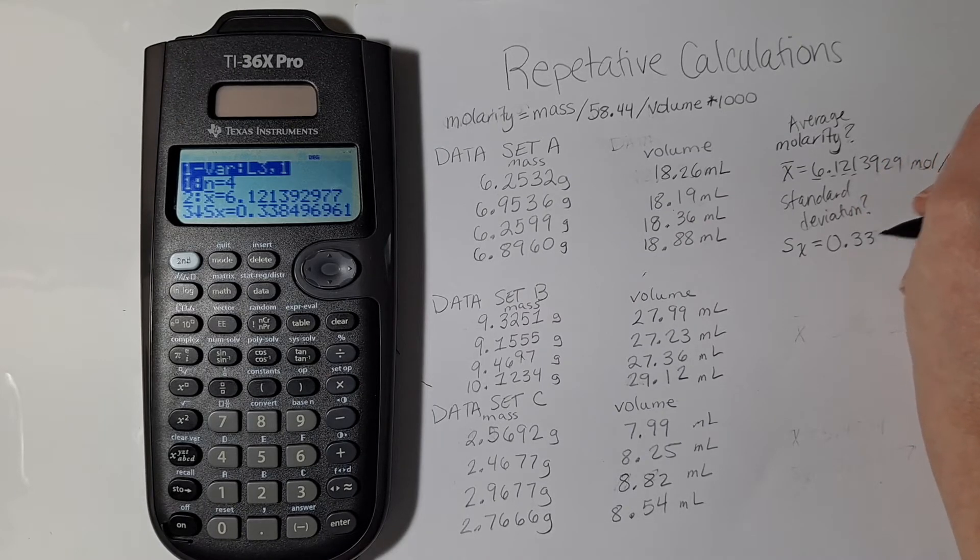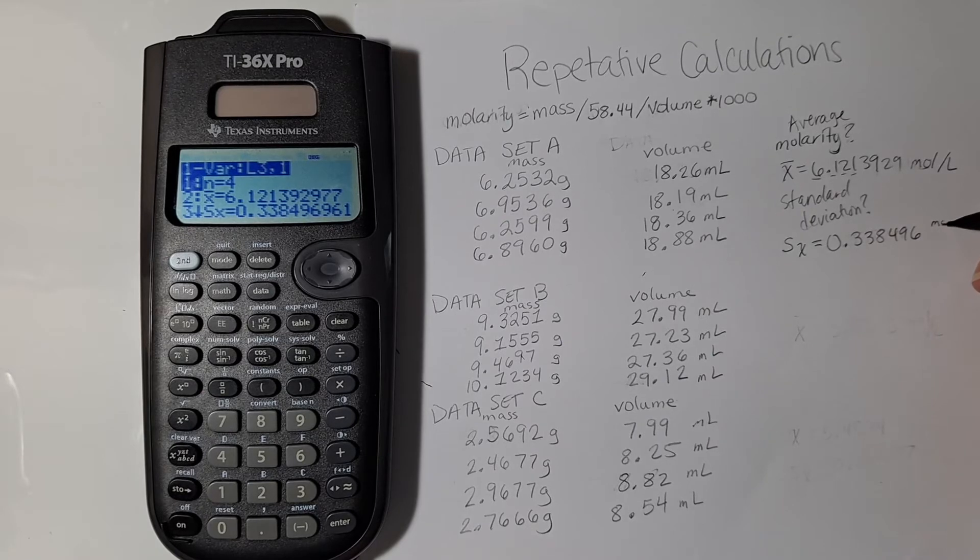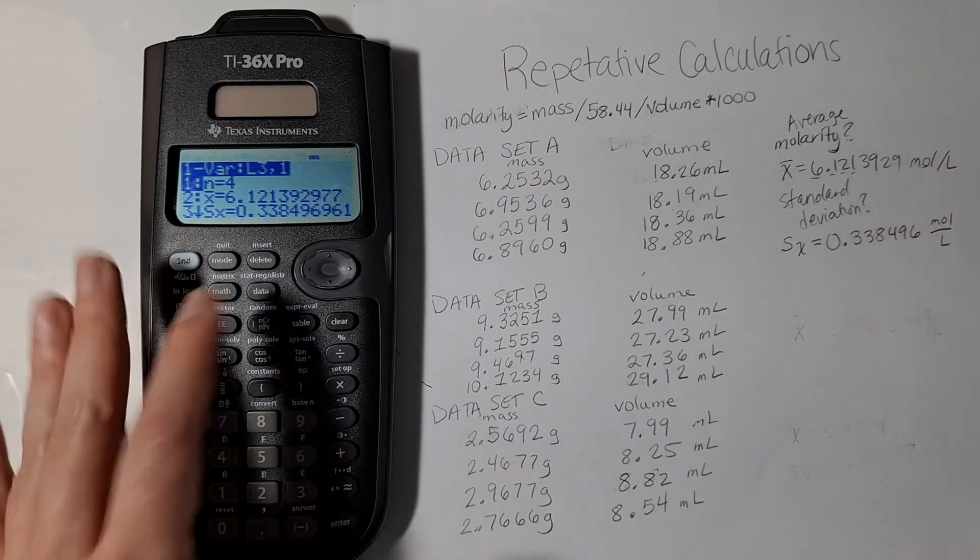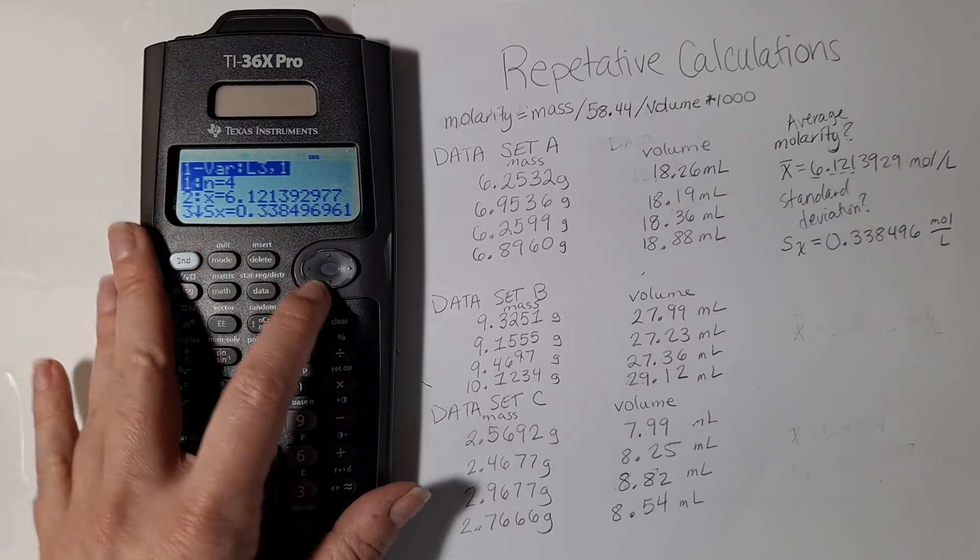But if you are doing some other type of problem you might need the other, the sigma x, which uses a finite population of n in the denominator, so make sure you know which one you need. For this one I'm using the sx so I wrote those down.